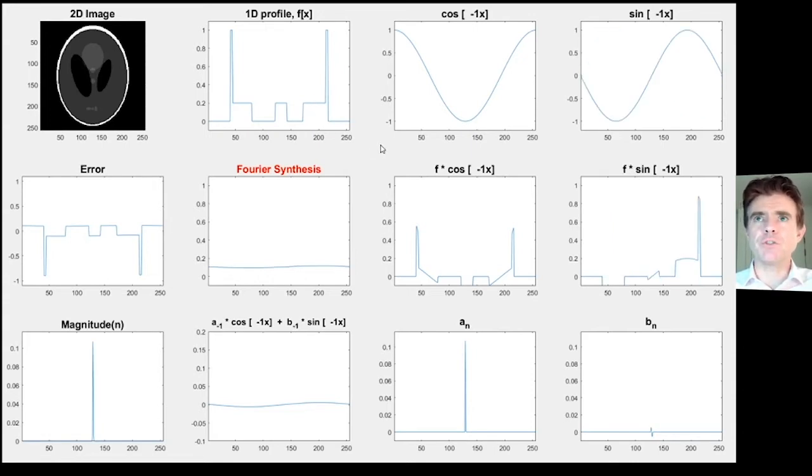This is the negative frequency. I've got cos minus 1x which looks identical. For the sine negative frequency, we get a negative sine wave. There's the product of the function. You can see I've got this equal and opposite outcome for b_n, which is expected when this is a real function. There's the addition of a₋₁ cos(-1x) plus b₋₁ sin(-1x), which I'm adding to my Fourier synthesis, and it hasn't done a great deal. The error is still large. Let's keep pressing on.